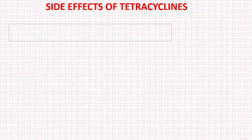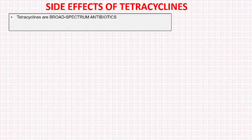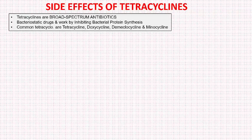Today we will go through some of the common side effects of tetracyclines. Tetracyclines are broad spectrum antibiotics — that is, they are active against a wide range of gram positive and gram negative bacteria. Tetracyclines are bacteriostatic drugs and they act by inhibiting bacterial protein synthesis. The tetracyclines commonly available are tetracycline, doxycycline, demeclocycline, and minocycline.